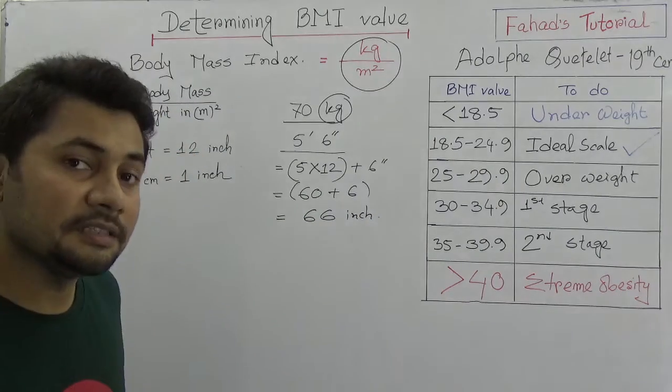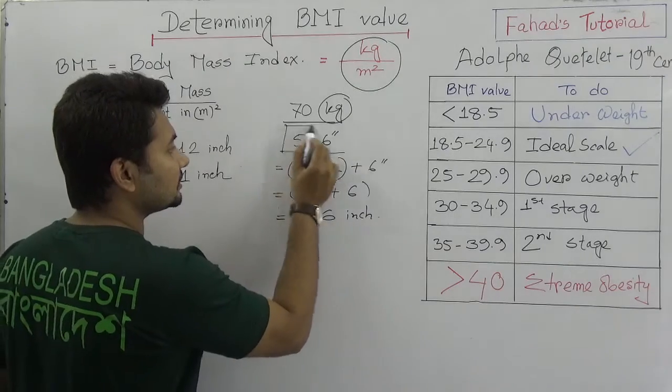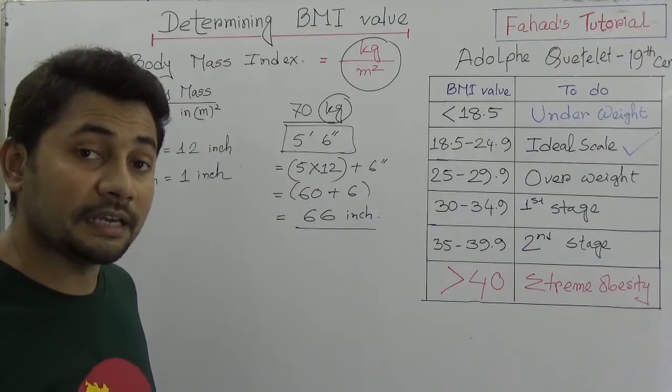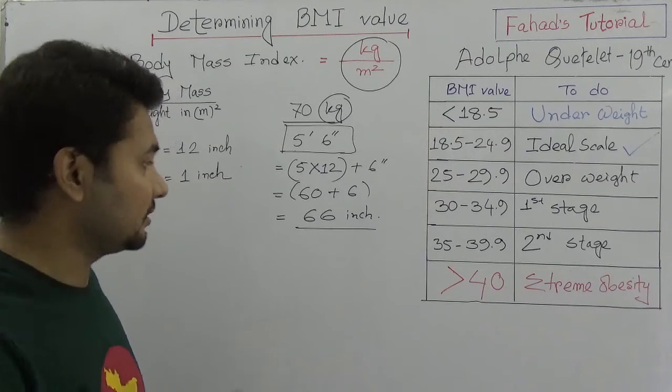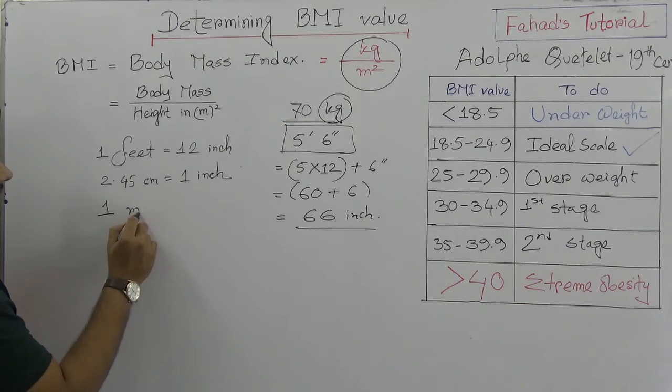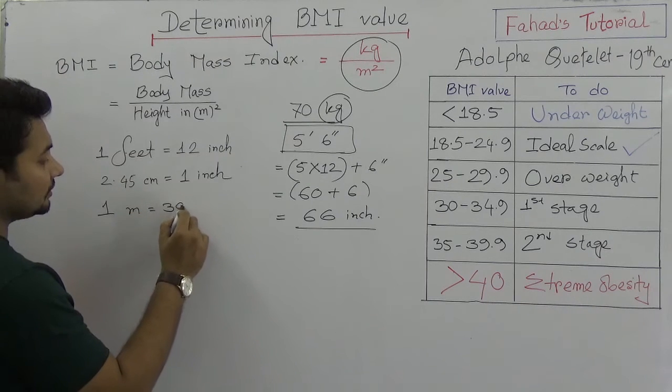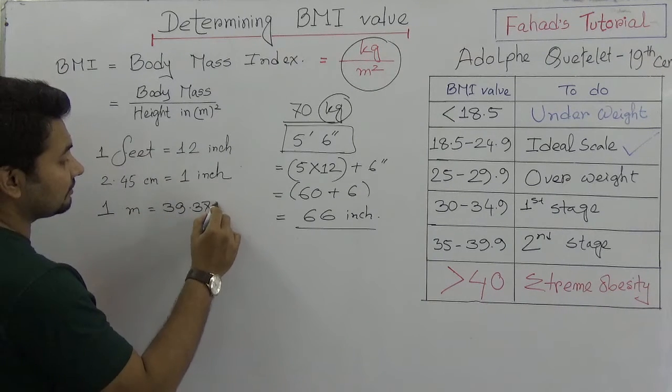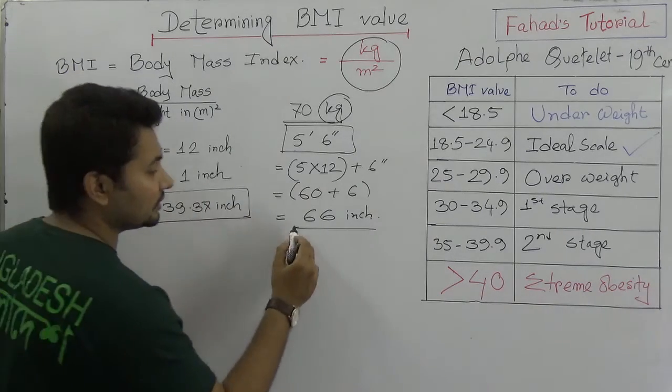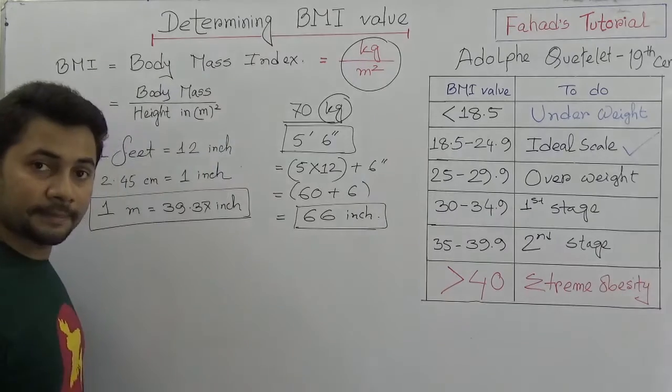So that means 5 feet 6 inches is equal 66 inches. Now we need to convert it into meter. Think about one thing: 1 meter is equal 39.37 inches. You can use this - is actually converted into meter.